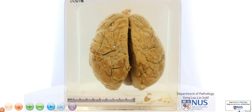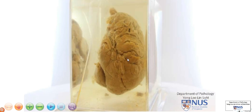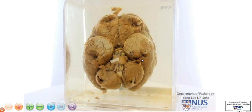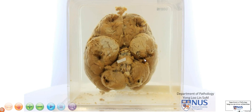Hello, we're looking at the specimen of a brain here. These are the cerebral hemispheres, and we're looking at it from the top. And as I turn it around, you can see the side view, and here we're looking at it from the bottom.